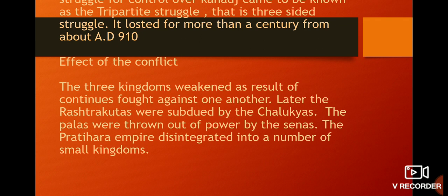Later, the Rashtrakutas were subdued by the Chalukyans. The Palas were knocked out of power by the Senas. The Pratihara empire disintegrated into a number of small kingdoms.